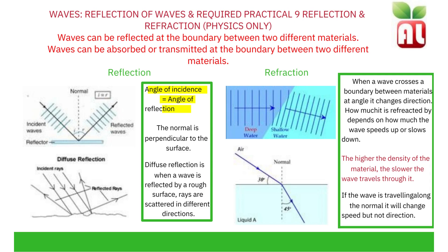Reflection of waves — required practical. Waves can be reflected at the boundary between two different materials, and can also be absorbed or transmitted at that boundary. In reflection on a smooth surface, we draw a normal, which is at 90 degrees or perpendicular to the surface. The incident waves hit the smooth surface and are reflected at the same angle from the normal. The angle of incidence equals the angle of reflection for reflection at smooth surfaces. On a rough surface, we see diffuse reflection, where a wave is reflected and rays are scattered in different directions.